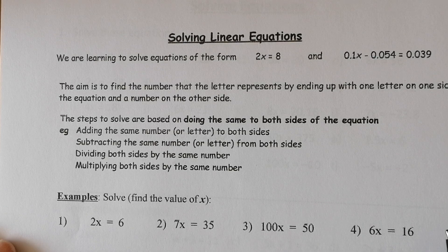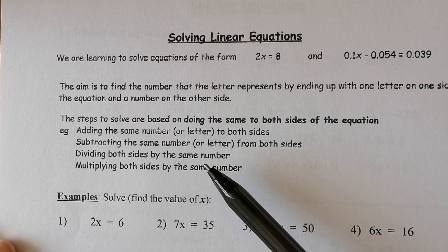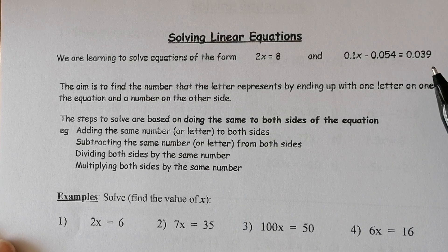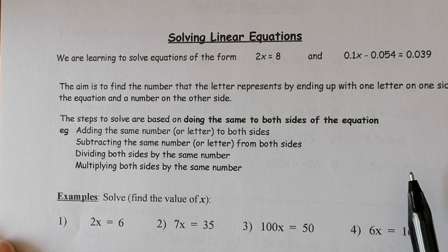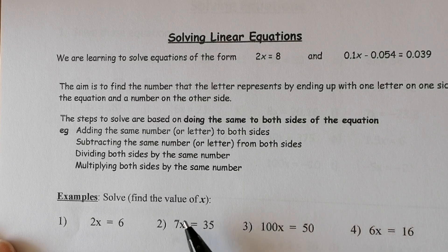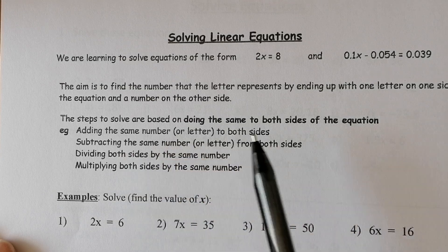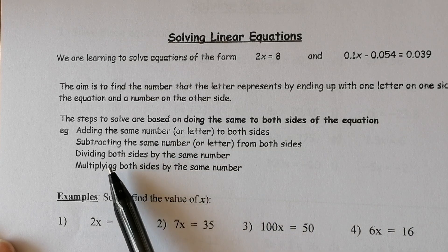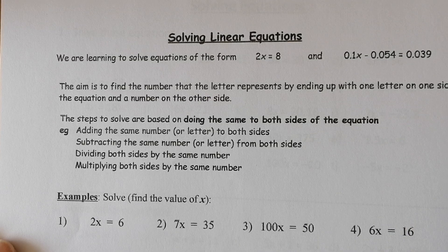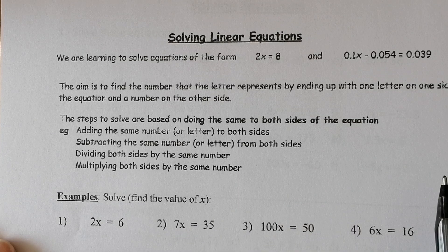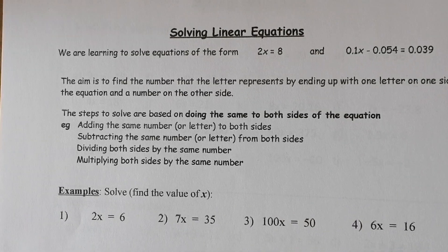The aim is to find the number that the letter represents by ending up with one letter on the left and a number on the right-hand side. The steps involve doing the same thing to both sides of the equation — if I add something to the left I add it to the right, if I subtract from the left I subtract from the right, and the same for dividing and multiplying.